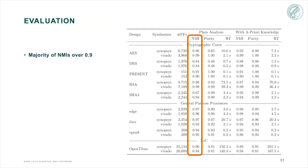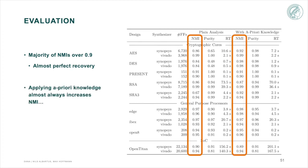When we evaluated our cores, we discovered that most of our results had an NMI over 0.9, which is close to a perfect recovery. We also observed that applying a priori knowledge almost always results in a higher NMI and thus in an even better recovery of registers. DANA has a short runtime and finishes in a matter of minutes, even on a standard laptop.